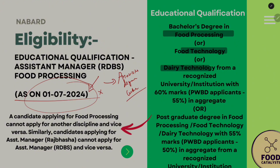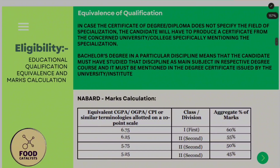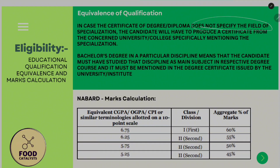The minimum marks required differ: 60% for bachelor's and 55% for postgraduate. For equivalent qualifications, if the degree does not specify the field of specialization, you need to produce a certificate from your college confirming you studied that specialization. For example, a degree in 'Food Technology and Management' would have food technology mentioned, so that's fine. Otherwise, extra certificates are needed. Importantly, the bachelor's degree must have the discipline studied as the main subject, and it should be mentioned in the degree certificate.